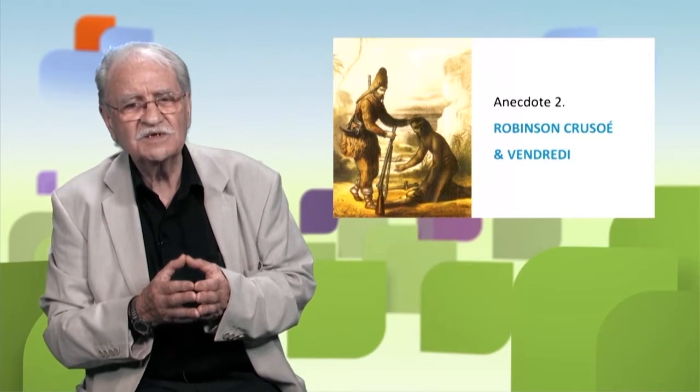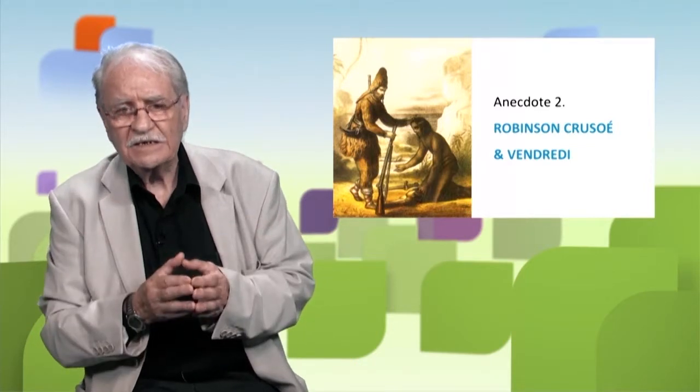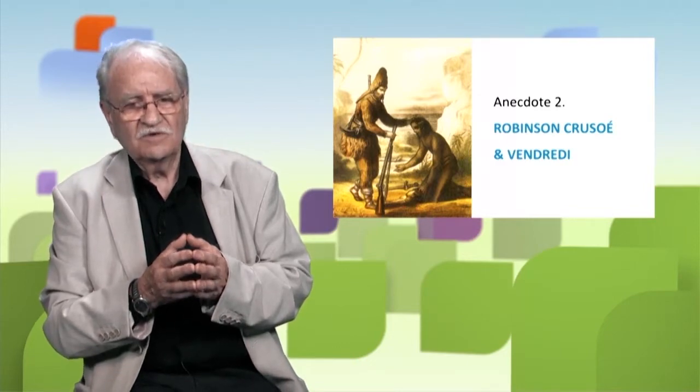The second anecdote I'd like to tell you is going to confront today's world with the world of yesterday — a time gap of three centuries. It's the history of Robinson Crusoe, written in 1719 during the Enlightenment by Daniel Defoe. It continues with Michel Tournier, who published a novel in 1967. Tournier, who died that year, renewed Defoe's story in the light of the 21st century, experiencing this world as one of violence.